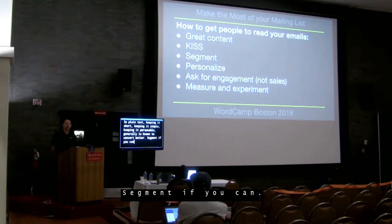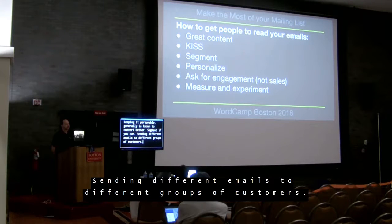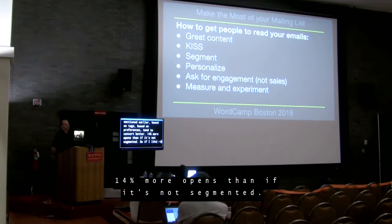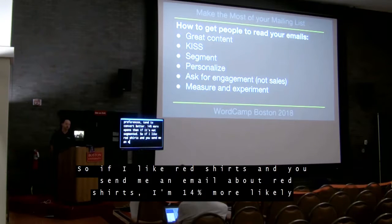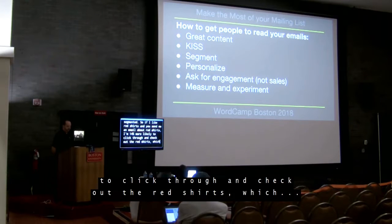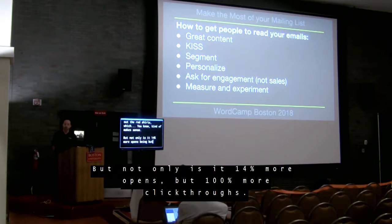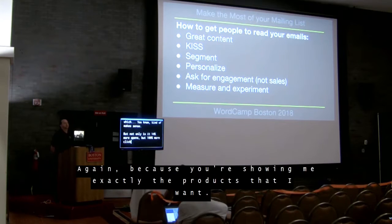Segment if you can — sending different emails to different groups of customers, based on tags and preferences, tends to convert better: 14% more opens than if it's not segmented. So if I like red shirts and you send me an email about red shirts, I'm 14% more likely to click through. And not only 14% more opens, but 100% more click-throughs, because you're showing me exactly the products that I want.